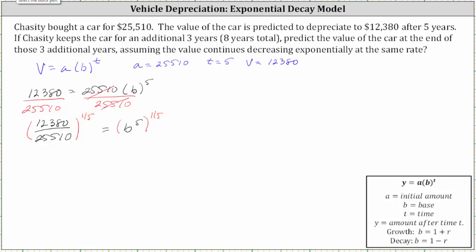On the right side of the equation, because we have powers raised to powers, we multiply the exponents. Five times one-fifth is equal to five-fifths or one, and b to the first power is just b. So now we know b is equal to 12,380 divided by 25,510 raised to the one-fifth power.